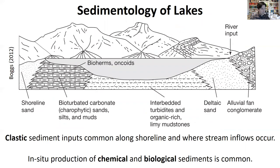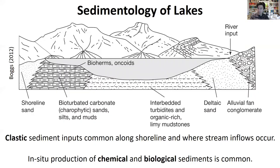Continuing on, we're now looking at a cross-section view of an open basin lake, showing all the different types of sediments you might expect to find across the lake basin. We tend to have what are called clastic sediment inputs, typically common along the edges of a lake — around the shoreline or where a stream flows in at a delta. Clastic sediments refer to weathered or broken-down fragments of material from pre-existing rock, transported to the lake via streams, winds, glaciers, or landslides.